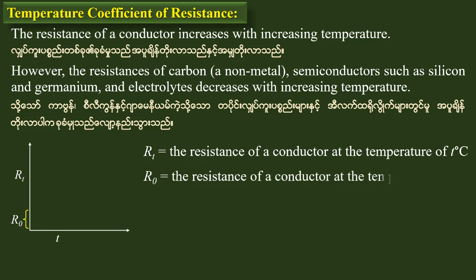A0 is equal to the resistance of the conductor at the temperature of 0 degrees Celsius. The resistance of the conductor increases with increasing temperature. The resistance of the system increases, and the power of the system increases with the resistance of the system.